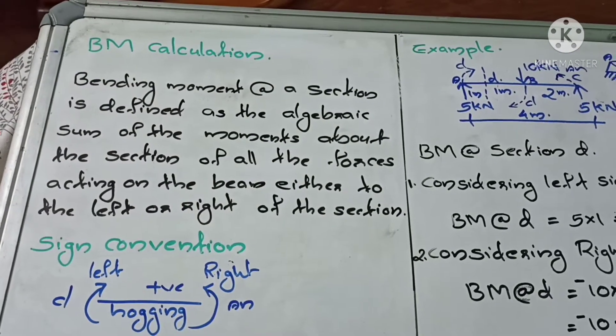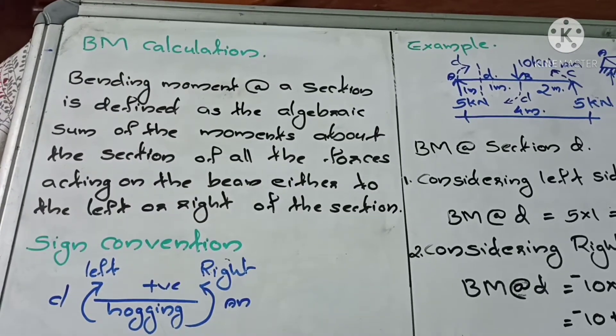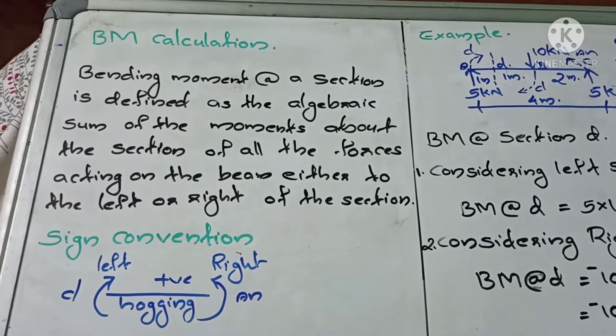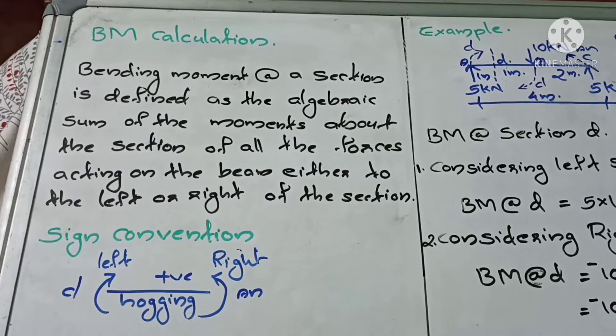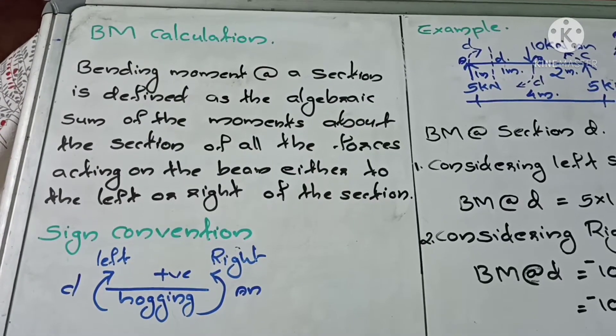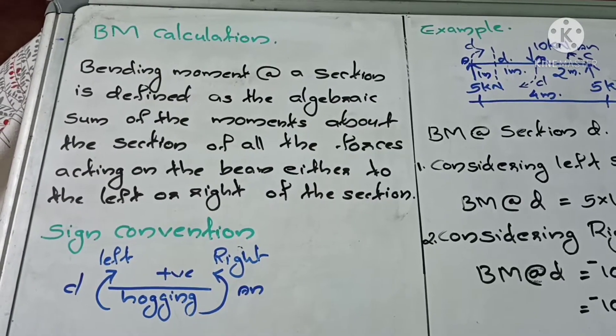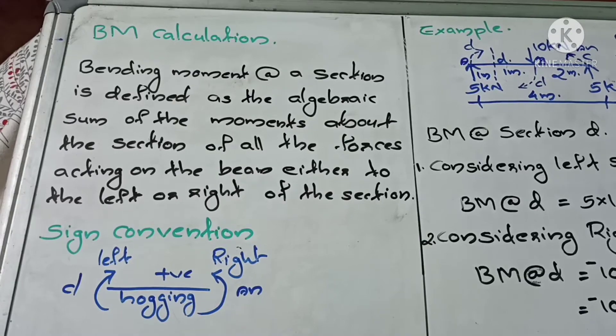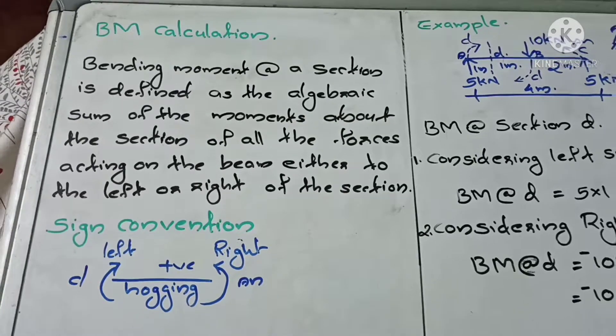Bending Moment at a section is defined as the algebraic sum of moments about the section of all the forces acting on the beam either to the left or right of the section.